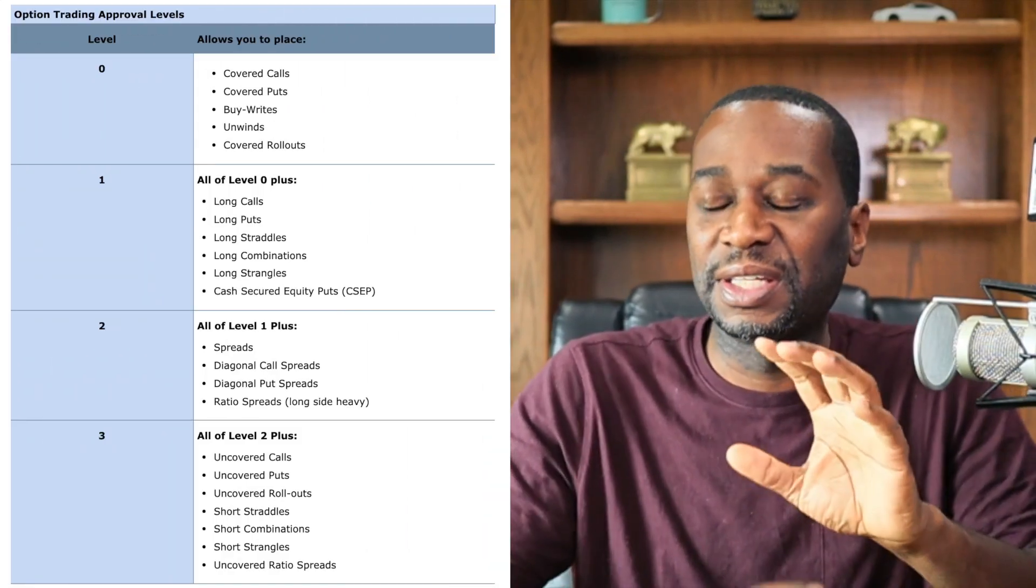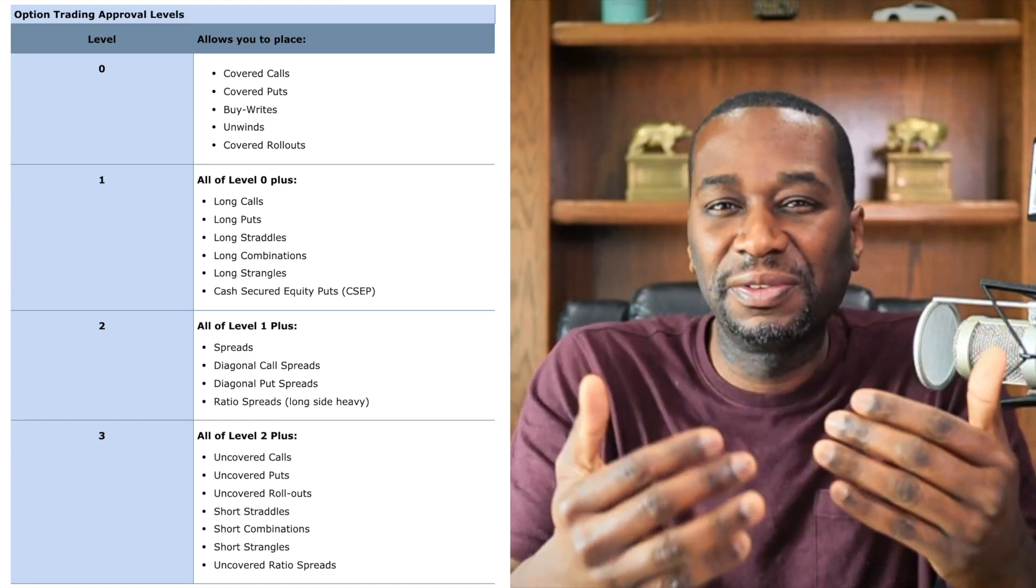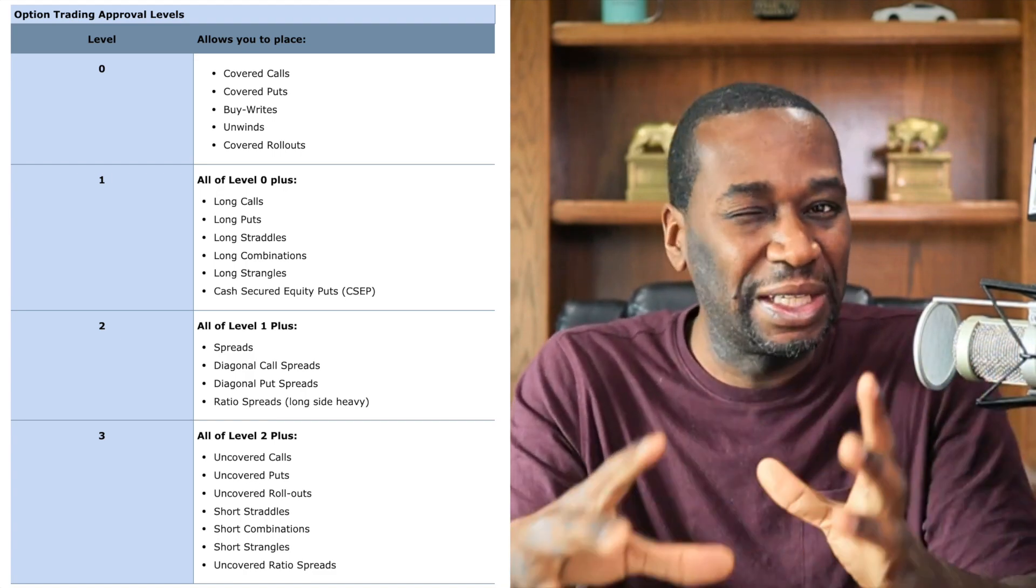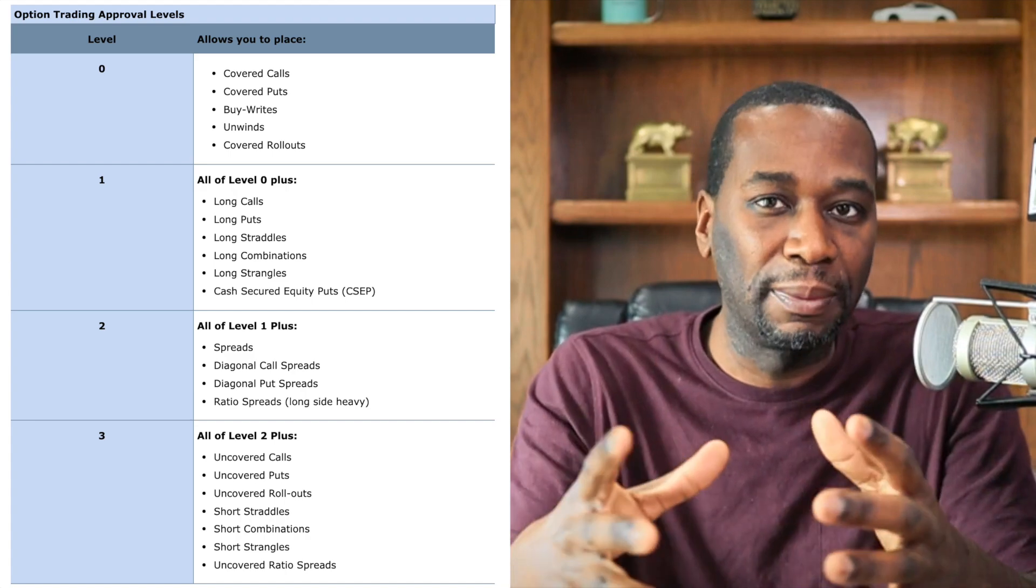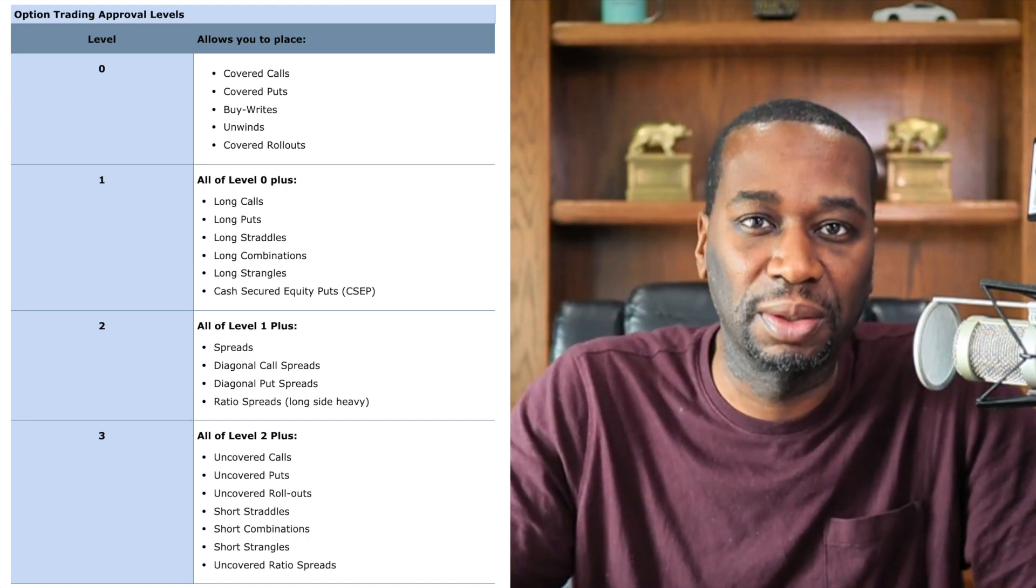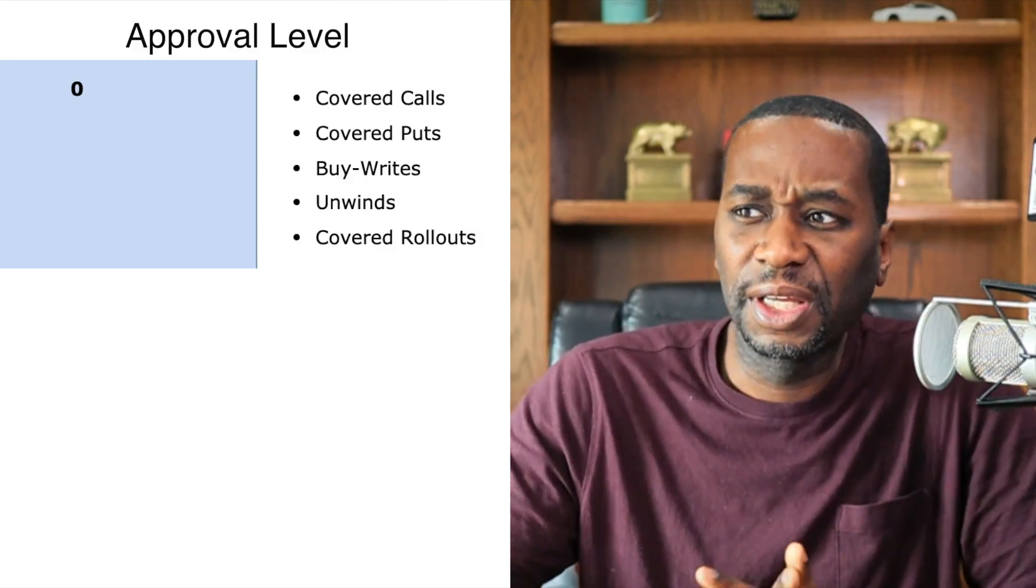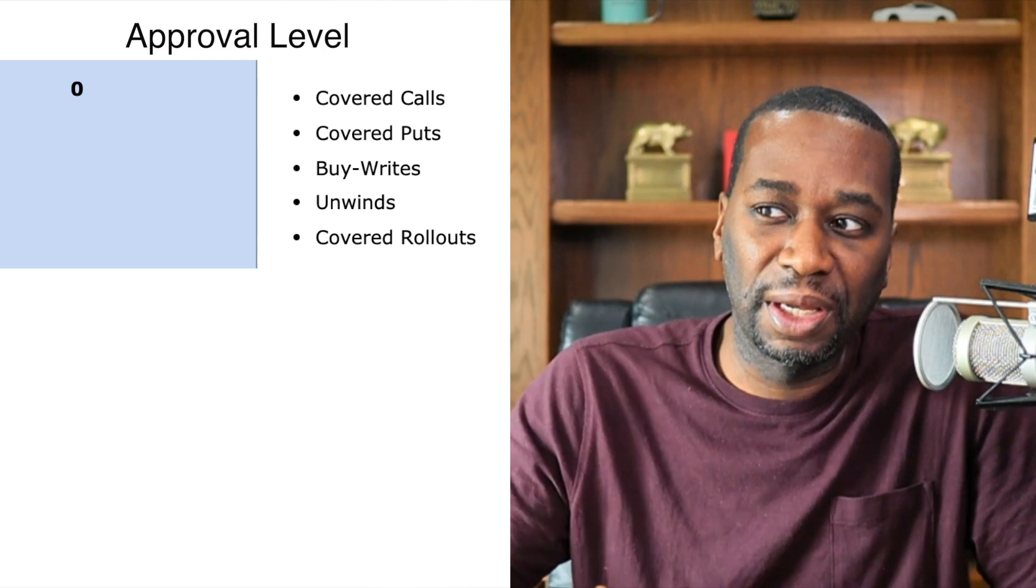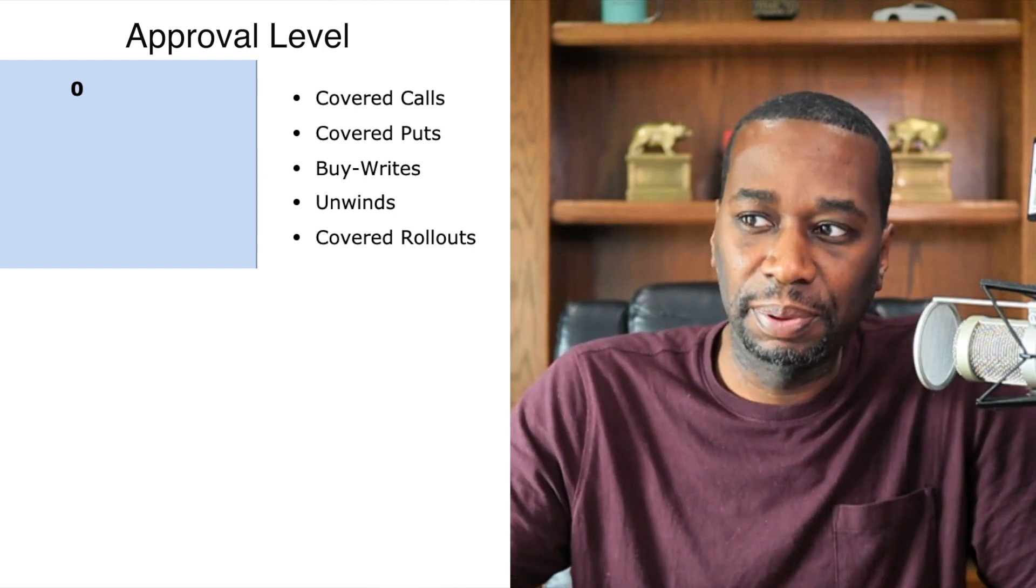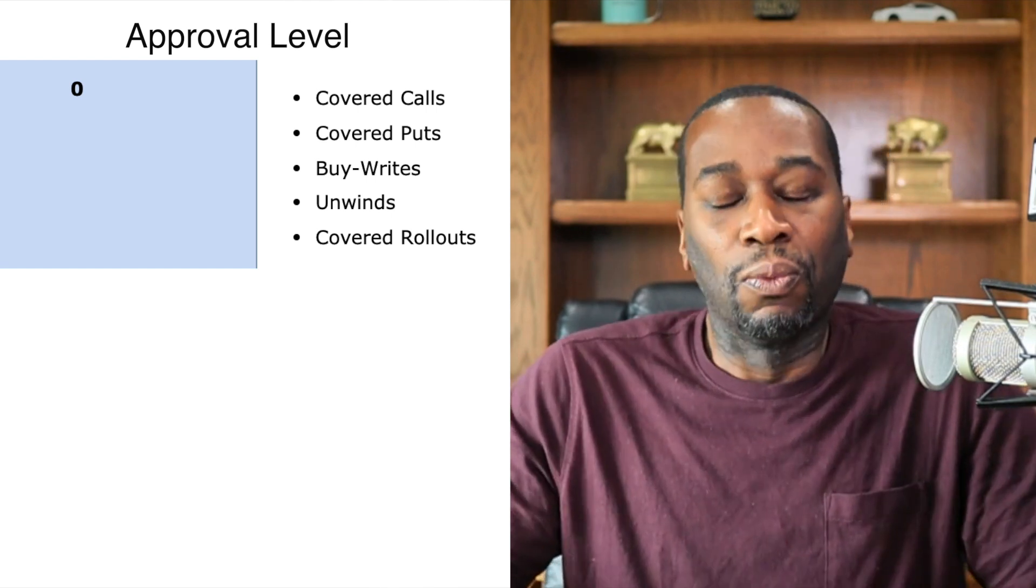So on the screen here that I have up is a screenshot from Charles Schwab. Now typically all of the option approval levels are the same across the board per company, so this should be pretty universal no matter what brokerage company you're looking at. So level zero, if you look at it here, level zero is being approved to place covered calls, covered puts, buy-writes, unwinds, and covered rollouts.